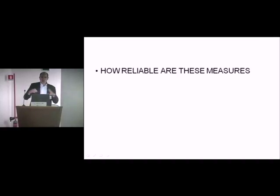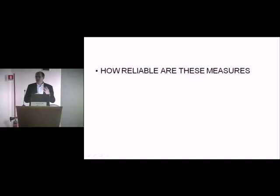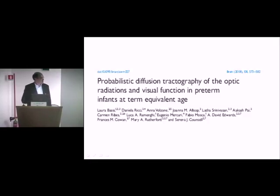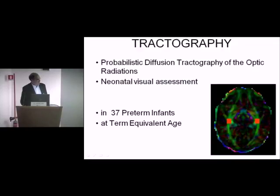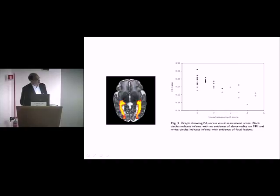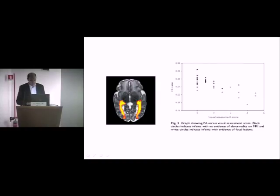The first question was: how reliable are these measures? This was addressed in a study done in collaboration with a London group who performed tractography of the optic radiation in 37 preterm infants at term equivalent age while Daniela's assessment was performed at the same time. The results showed a very nice correlation between tractography values and the visual assessment — confirming that what we were measuring clinically was correlated with the maturation of the optic radiation.